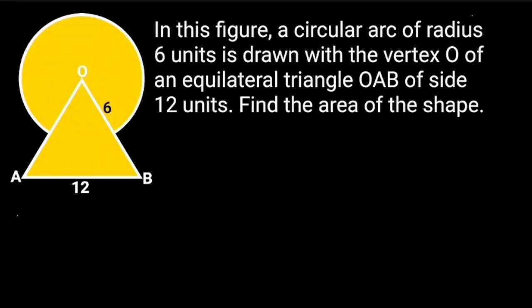In this figure, a circular arc of radius 6 units is drawn with the vertex O of an equilateral triangle OAB of side 12 units. Find the area of the shape.